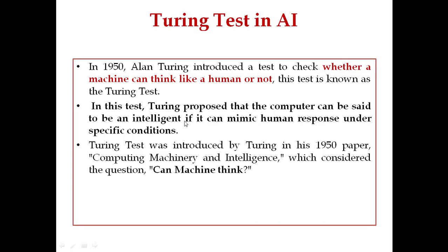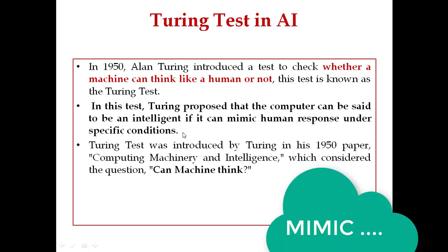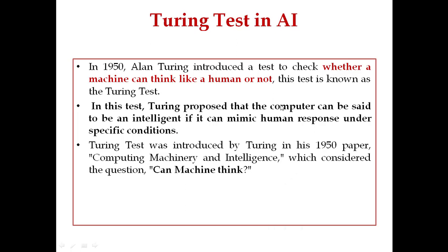In this test, Turing proposed that a computer can be said to be intelligent if it can mimic human responses under specific conditions. This means that under a given situation, the machine copies the responses that a human would normally give. If it does the same thing as a human would do in that condition, it is said to be mimicking human response.